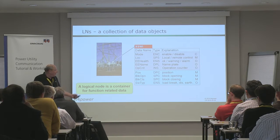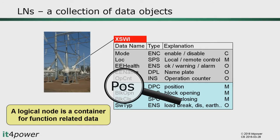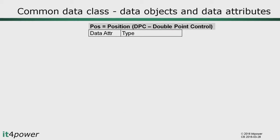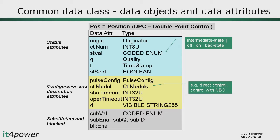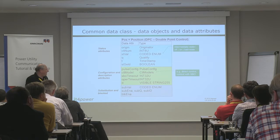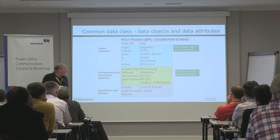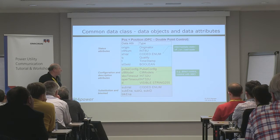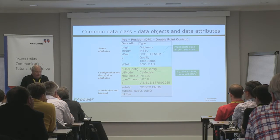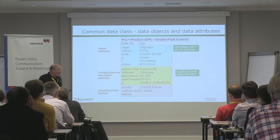Looking in more detail at the position data object, the common data class 'double point controllable' defines a series of attributes: operational attributes representing the status value, quality, and timestamp, plus configuration and description information. For example, you can configure select-before-operate, and the class includes an attribute defining the timeout parameter for that operation. So the data object groups not only operational information but also configuration-specific information — all defined in the common data classes in part 7.3.